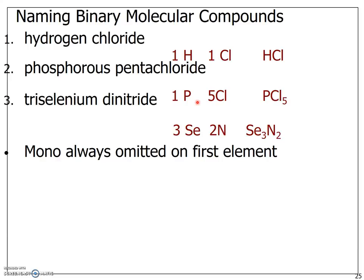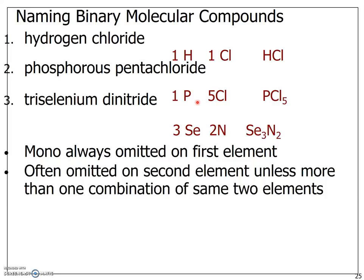Please note that the mono is always omitted on the first element. Now, there are some element compounds where the second element, the first element and the second element combination is always the same. So in the case of hydrogen chloride, there's always going to be one hydrogen, one chloride.